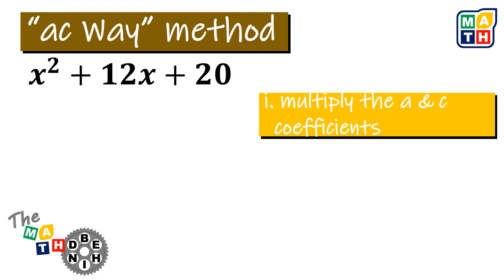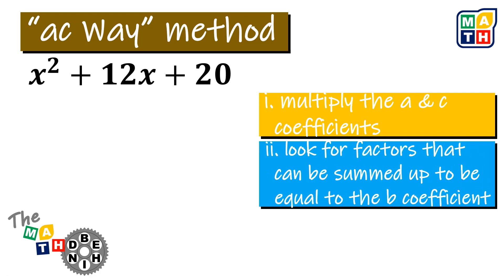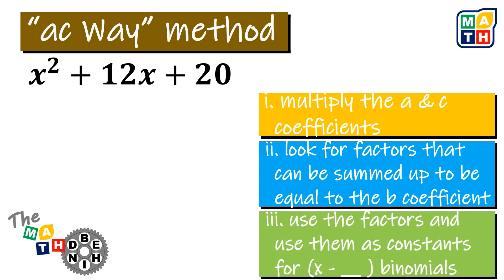Number one, we need to multiply the A and C coefficients. Next, after getting the product in step one, we need to look for the factors of that product that can be summed up to equal the B coefficient. And finally, whatever those factors are, we need to pair them with the expression to get the two binomials that will ultimately be the factors of the given quadratic expression. Notice that in the first step we are using the product of A and C coefficients — hence the term AC-Way.